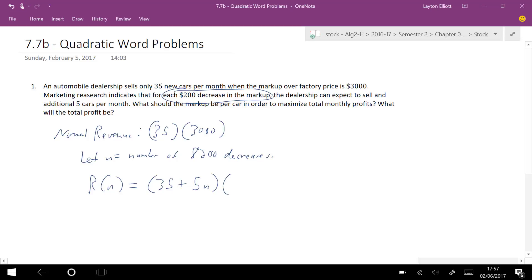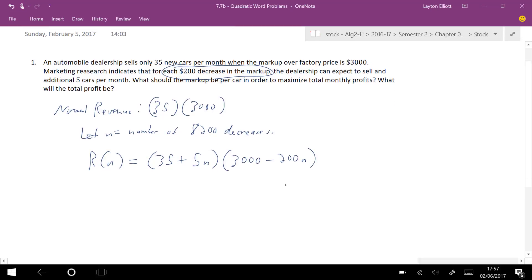But then I multiply that by, I'm going to change this 3,000. So it's 3,000, but I'm decreasing it by $200 times the number of markups. This tells me, kind of, this is just a general setup. One thing is increasing, the other thing is decreasing. So this is the function that I'm going to maximize.